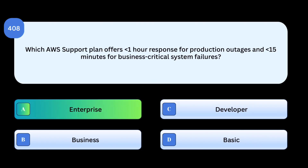Correct answer: Enterprise. Enterprise Support offers the fastest SLA — 15 minutes for critical issues and one hour for production issues. Why others are incorrect: Business provides one-hour response for urgent cases, but not 15 minutes. Developer has slower response times, only for dev/test use cases. Basic has no guaranteed response times.